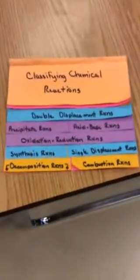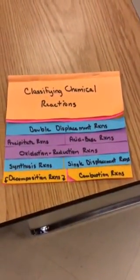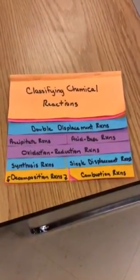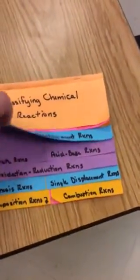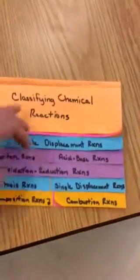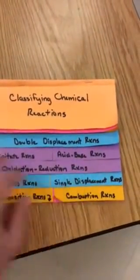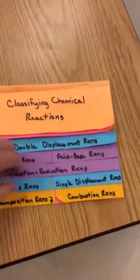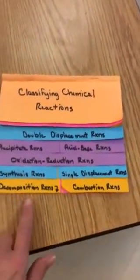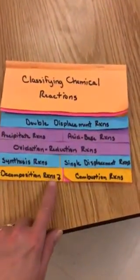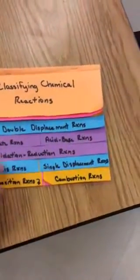Now, what I need you to do is pause the tape for just a minute and get all of these tabs labeled. Please make sure that you cut this one all the way up the middle. This one also gets cut. And the last one gets cut — decomposition reactions and combustion reactions.